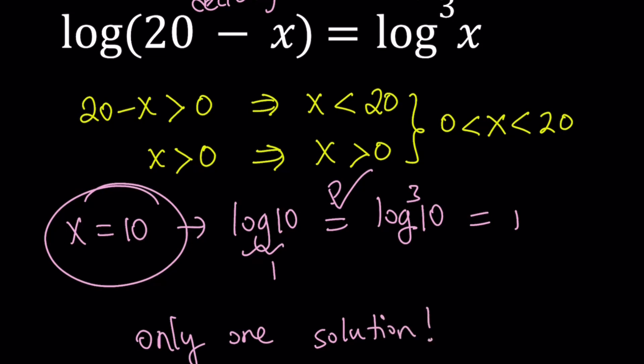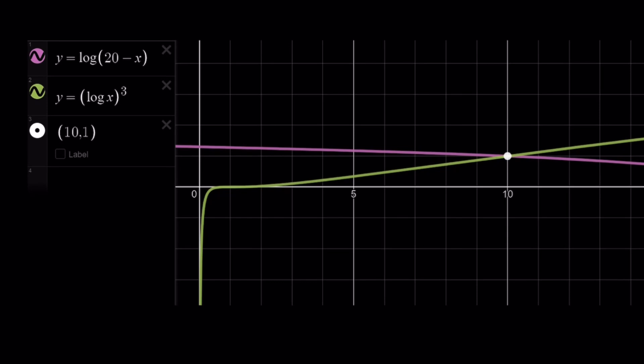And that happens to be x equals 10. Great. Let's go ahead and take a look at the graph and see what that looks like. So our graph of both of these functions, when graphed together, should give us a good idea.